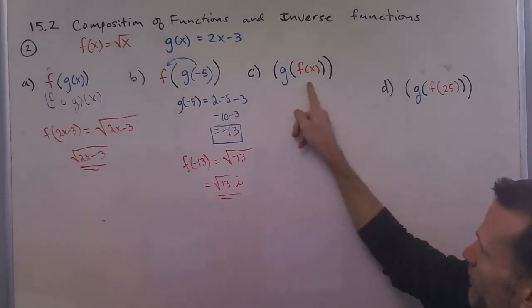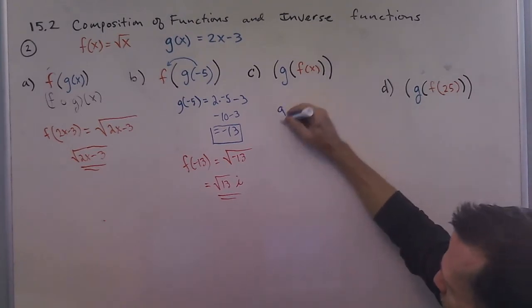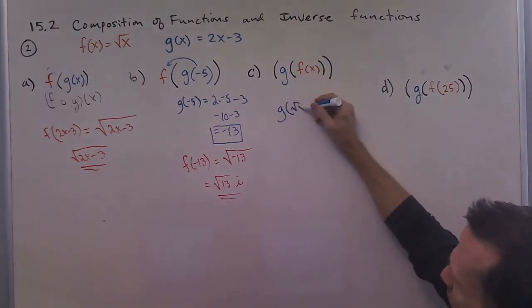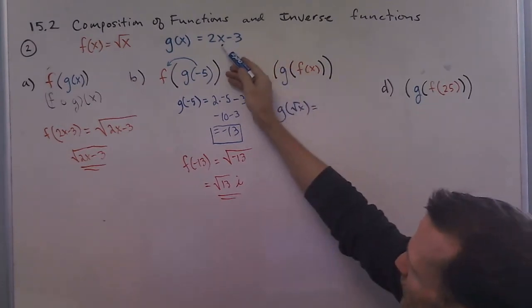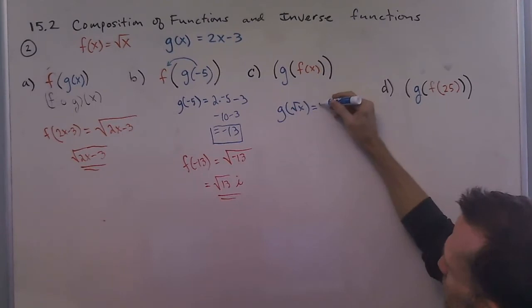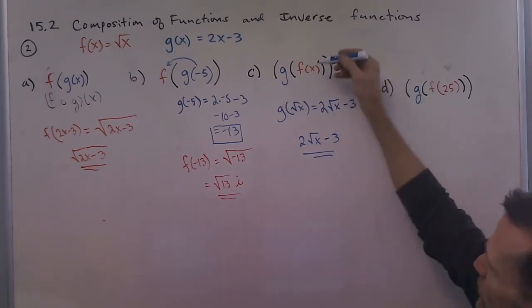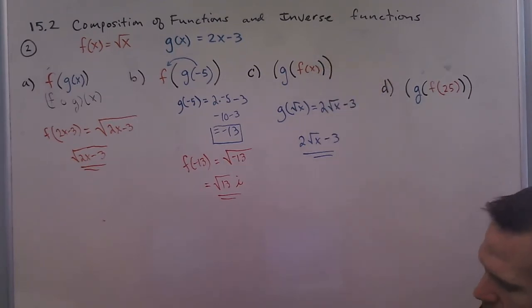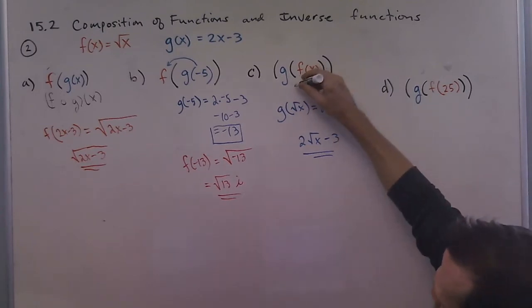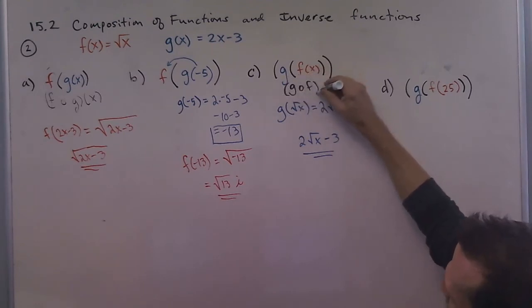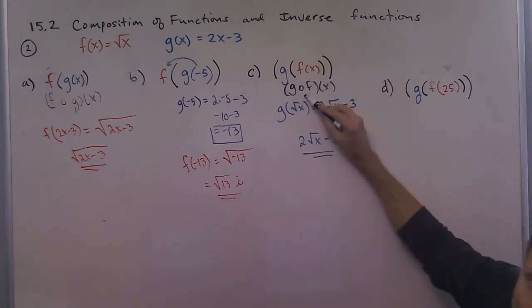And so we're going to put f of x, the f of x function inside g of x. So we know the f of x function is the square root of x. And so we're going to put the square root of x wherever we see an x. So we have 2 square root of x minus 3. And that's the answer there. So remember, this could have been written out also. You might have seen this written as g composed with f of x using that small composed symbol.